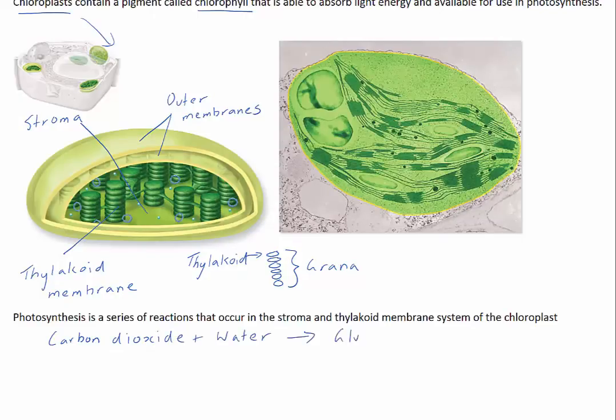The internal membranes of the chloroplast are folded many times. This provides more surface area for chemical reactions of photosynthesis to occur.